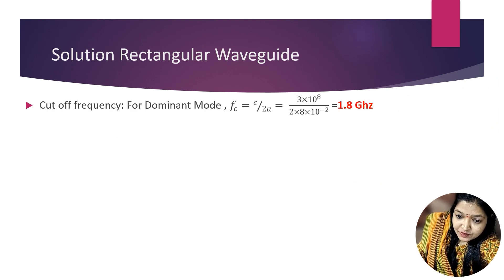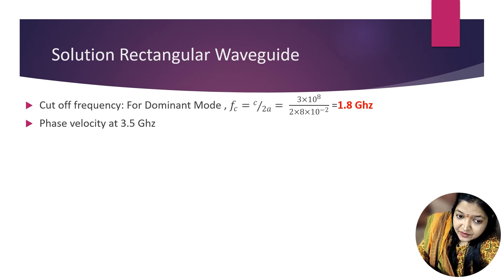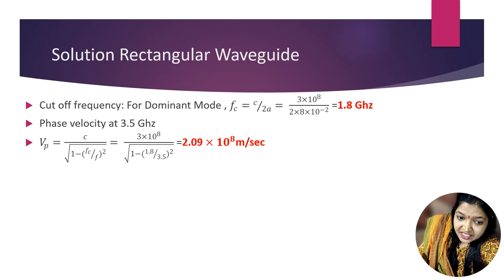First we want to find the cutoff frequency for dominant mode. The cutoff frequency formula is fc = c/(2A). c is the speed of light = 3×10⁸ m/s. That's why we converted to meters. Then A = 2×8×10⁻² because it is 0.08. The answer is 1.8 GHz. This is your cutoff frequency.